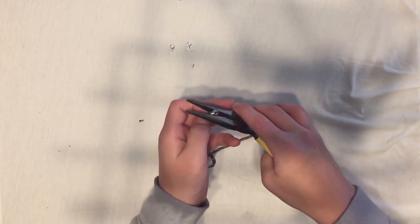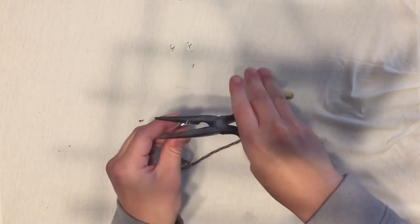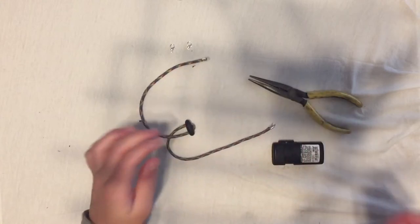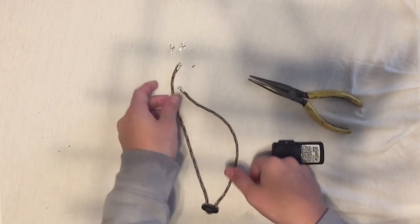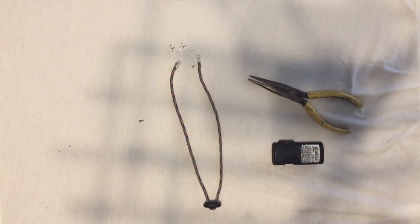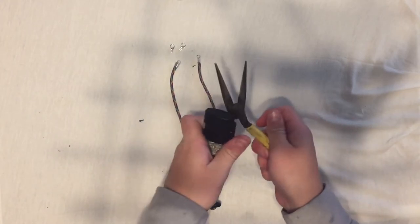And now I'm going to take my pliers again and I'm going to crush it, and now I have the two spring parts on there. Next step: you will not need your lighter or your needle nose pliers again, so you can put those aside.